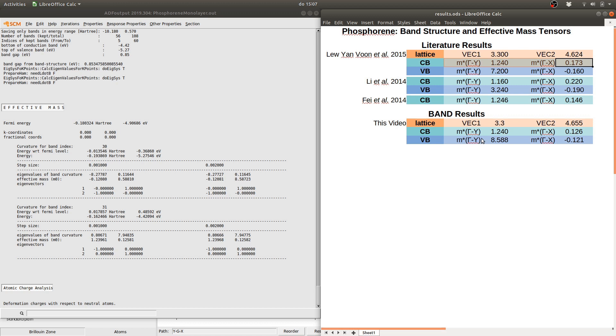In the case of the valence band, the situation is slightly different. The order of magnitude of this value matches pretty well. So we have 7.2 in the reference paper compared to 8.6 in our result and we have a small negative value which is about minus 0.12.